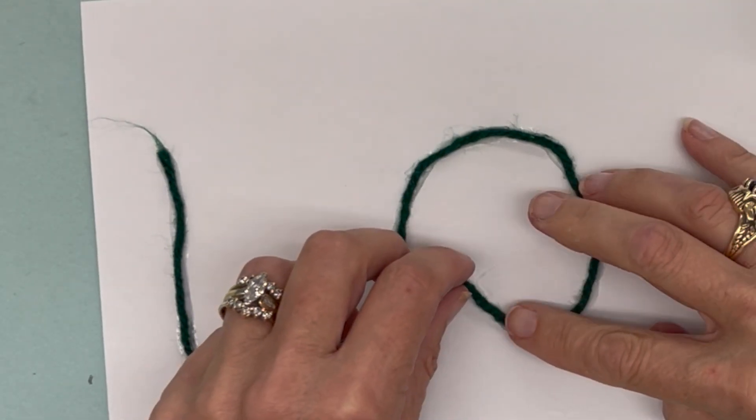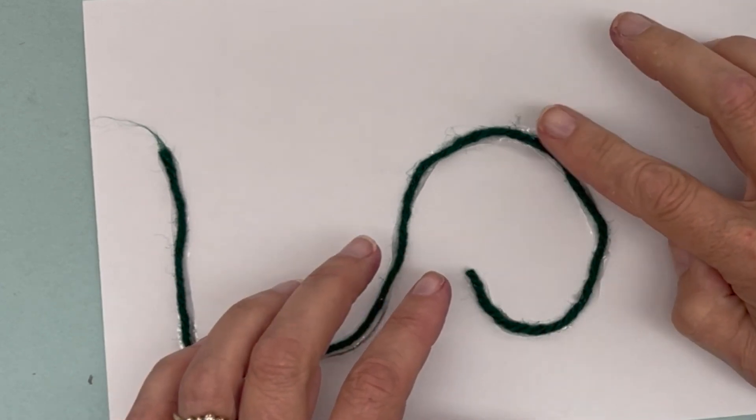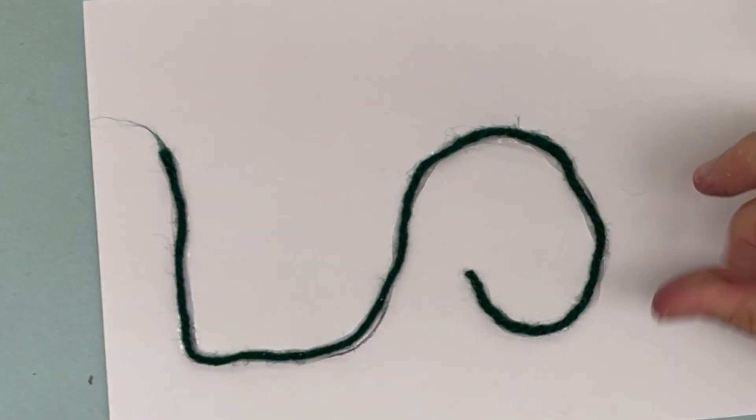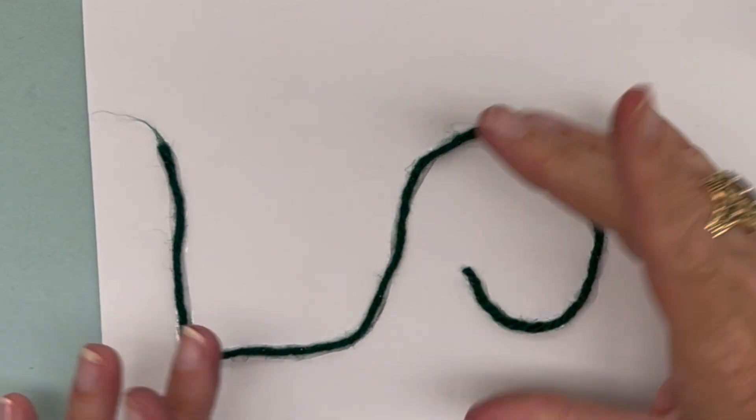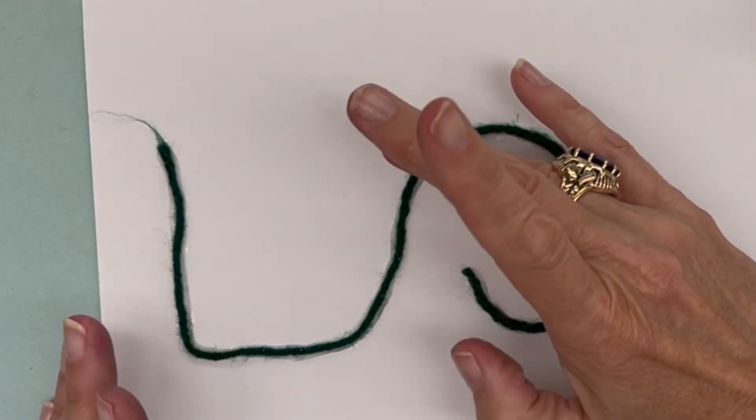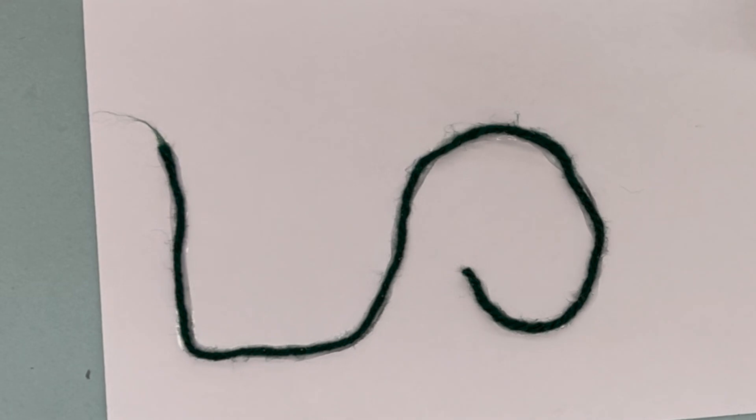Some of the glue might show a little bit, but the idea is to get the right amount of glue so that there's not tons and tons of extra glue.